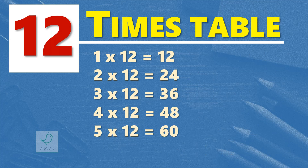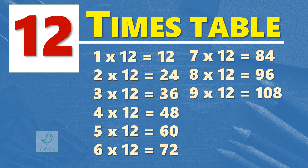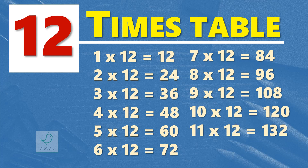5 times 12 are 60, 6 times 12 are 72, 7 times 12 are 84, 8 times 12 are 96, 9 times 12 are 108, 10 times 12 are 120, 11 times 12 are 132, 12 times 12 are 144.